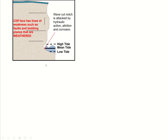As for the cliffs, we have different tide lines. We have the mean tide line, which is the average position of the tide, but we also get low tide and high tide. In between those, we will get a wave cut notch, eroded by hydraulic action, attrition, abrasion, and corrosion.